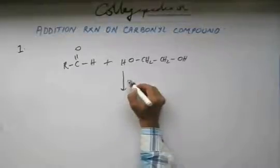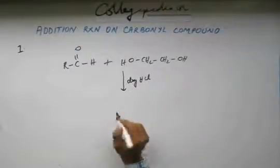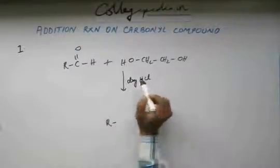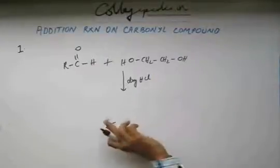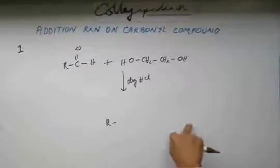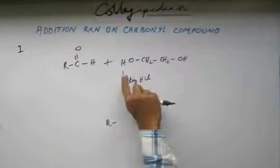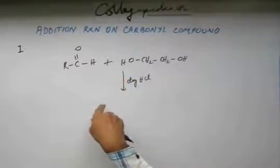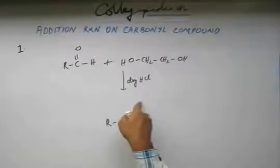Now if I take these two in presence of dry HCl, because there are two OH groups in the same compound—the last time what we did was we added one alcohol then the next alcohol. But there are two alcoholic groups in the same compound. So from one end the first alcoholic group will get added, and for the next step from the same compound the next alcoholic group will be added.